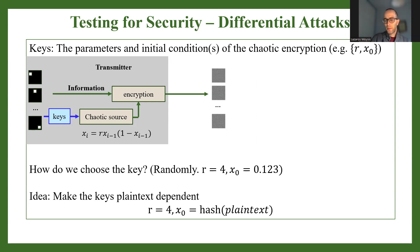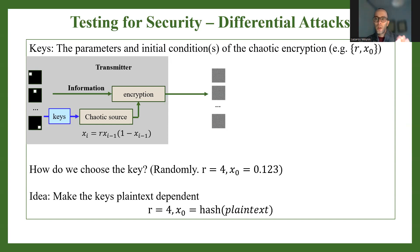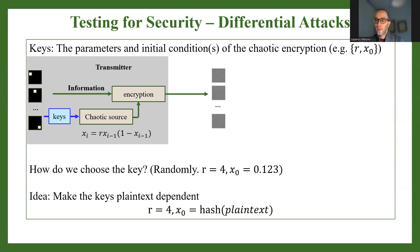The attacker takes this very simple image, encrypts it, and obtains a result. Then they take the exact same image but apply a very minor change — changing only a single pixel each time, moving it to a different position. They encrypt it again and obtain a different ciphertext. They repeat this process, obtaining a collection of ciphertexts that all originate from the same image with only minuscule changes, and then compare the ciphertexts to see what differences exist between them.